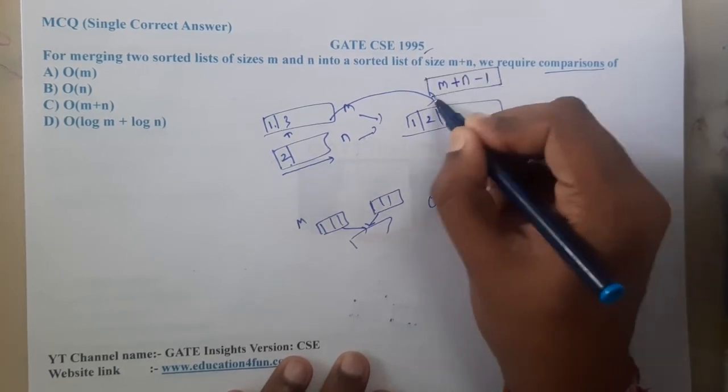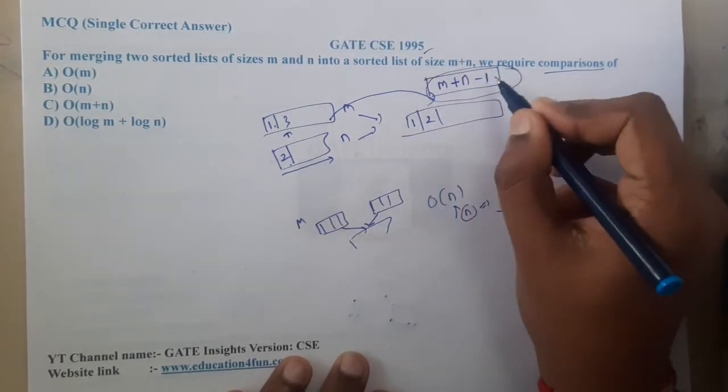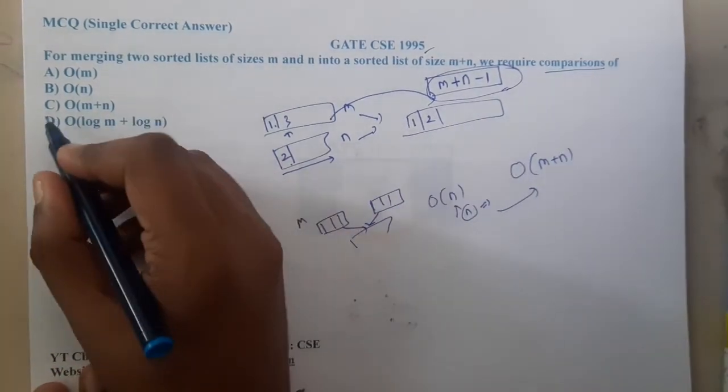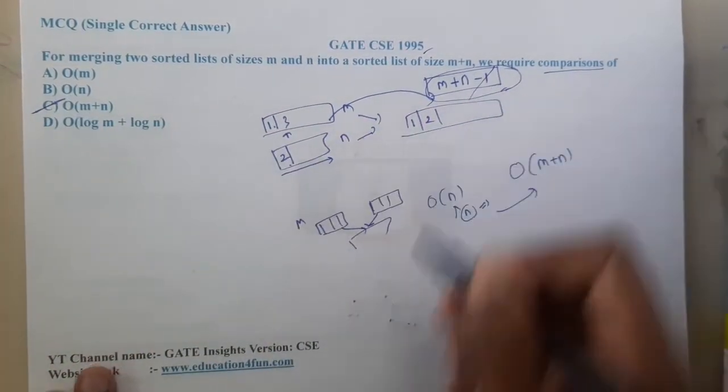If you write it in asymptotic notation, it will be O(m+n) because one is a constant. So in total, we require O(m+n) comparisons. But some of you might be saying no,